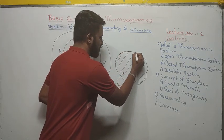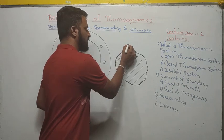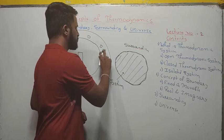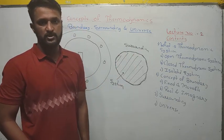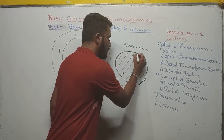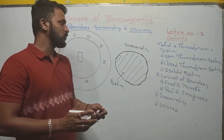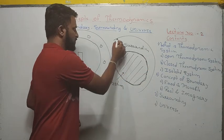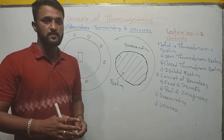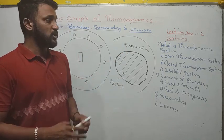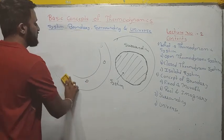Now if you see this envelope, it separates the system from the surrounding. Anything external to the system is called the surrounding — you can compare this to the stands in the cricket analogy. This envelope which covers the system and separates it from the surrounding is nothing but the boundary of the system. The entire thing together is called the universe. The universe contains the system, the boundary, and the surrounding. This is the basic concept of system, boundary, and surrounding — a very important question in your examination for five marks.